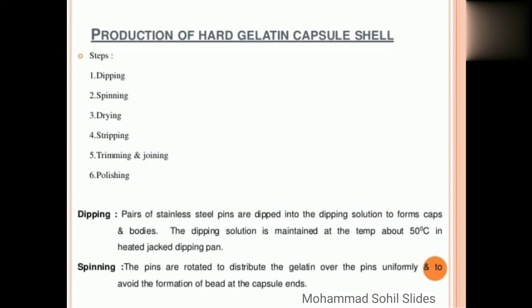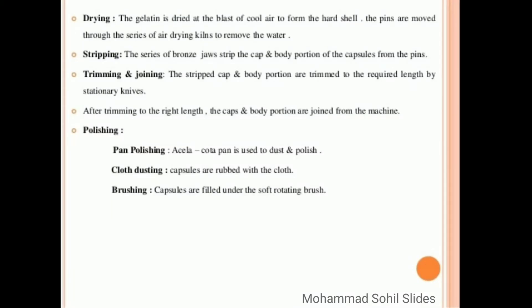Third, drying: the gelatin is dried at the blast of cool air to form the hard shell. The pins are moved through the series of air drying to remove the water. Then fourth, stripping: the series of bronze jaws strip the cap and body portion of the capsule from the pins.